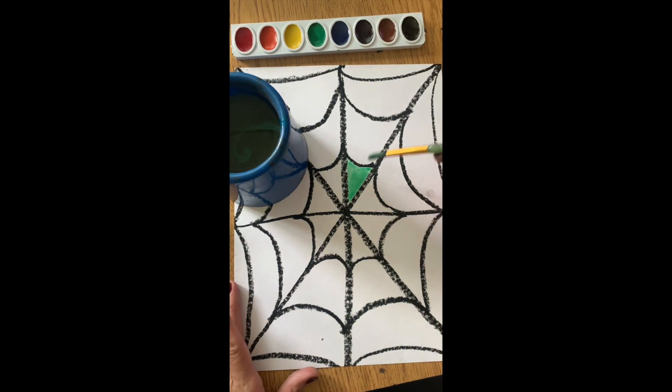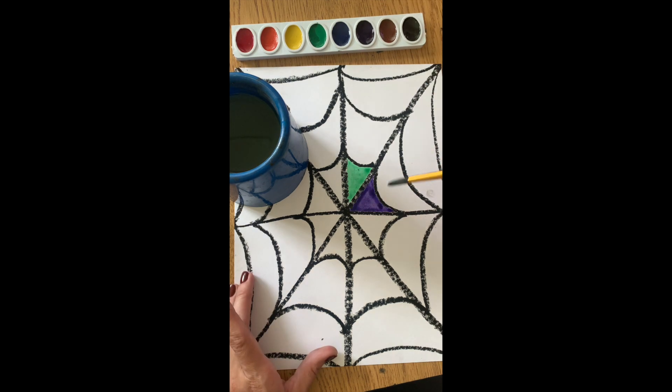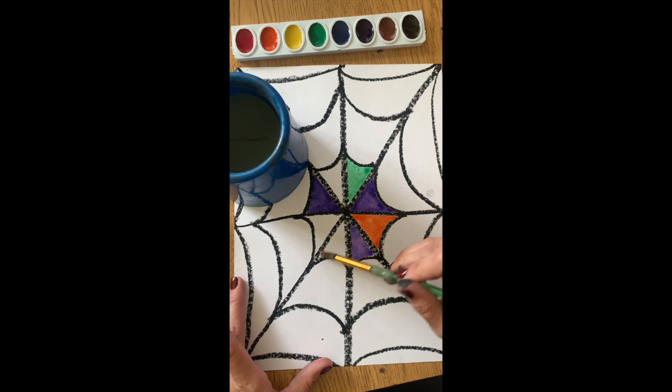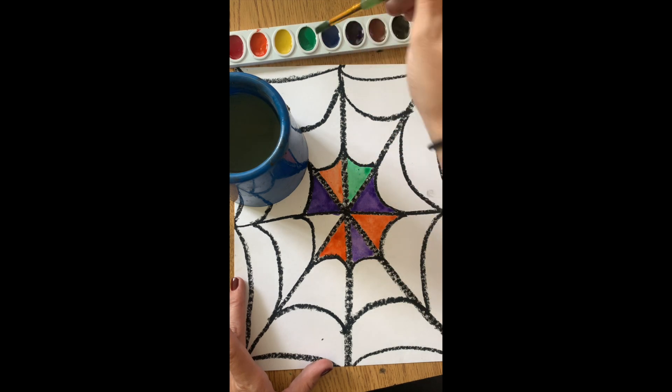Now it's time to paint. We are using the secondary colors. The secondary colors are purple, green, and orange. Use these in a variety of ways, or you can create a pattern.